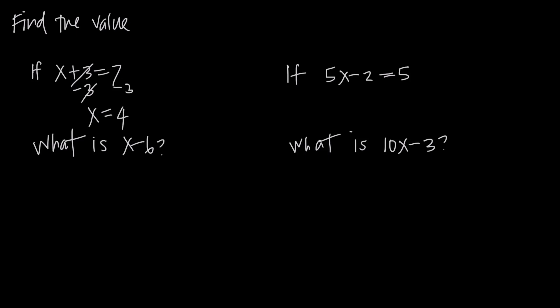Now we've solved for x. We have a specific value for x, and we can plug it into the second equation. Since we know that x equals 4, when we ask what is x minus 6, it's whatever we get when we plug in 4. 4 minus 6 is negative 2. So the value we're looking for is negative 2.